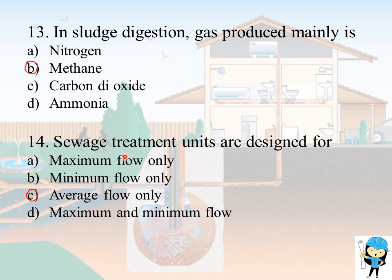Sewage treatment units are designed for average flow only. They are not designed for maximum flow since that may lead to uneconomical sections, and not for minimum flow since that may cause overflow. Therefore, average flow only is the correct answer.